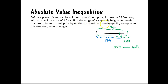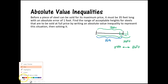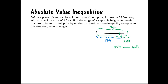The key here is that it asks us to write it as an absolute value inequality, so that answer isn't enough — we need to actually write the absolute value inequality and then solve it. The next step after drawing an image is to find our variables, because in algebra we need to have a variable. Usually people like to use X, or you can use a value that represents the situation, like S for steel.